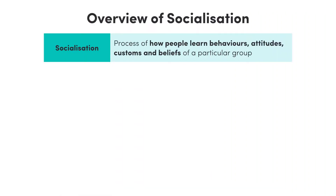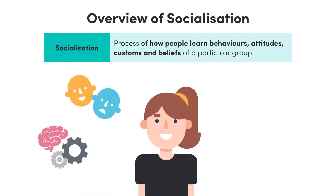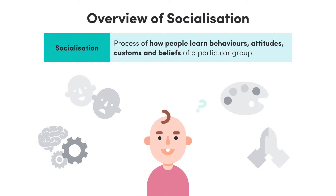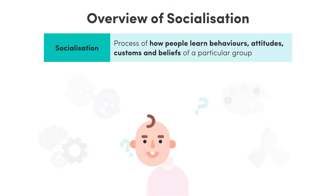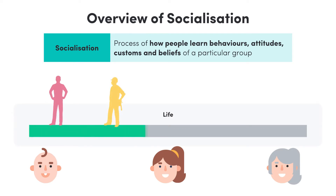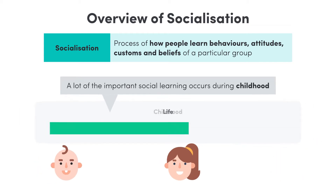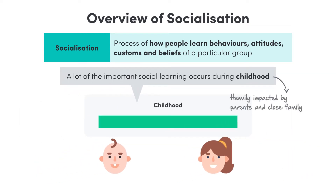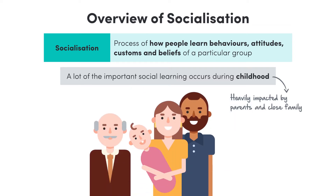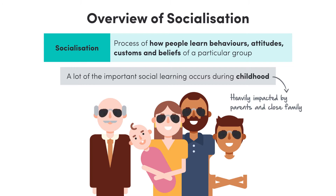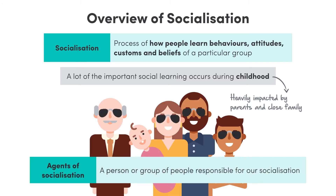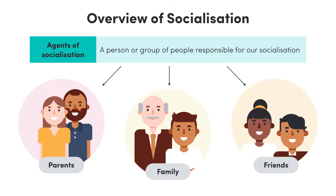Socialisation is the process of how people learn the behaviours, attitudes, customs and beliefs of a particular group. The idea behind socialisation is that we aren't born with this kind of knowledge. Instead, we learn these behaviours and attitudes as we grow up and interact with the people around us. While the socialisation process happens throughout our entire lifespans, a lot of the really important social learning occurs in childhood, where our parents and close family often have a really big impact on what and how we learn. The people who facilitate or encourage our socialisation can also be called agents of socialisation — a person or group of people who are responsible for our socialisation. So this could be your parents, family or friends, but more on that later.